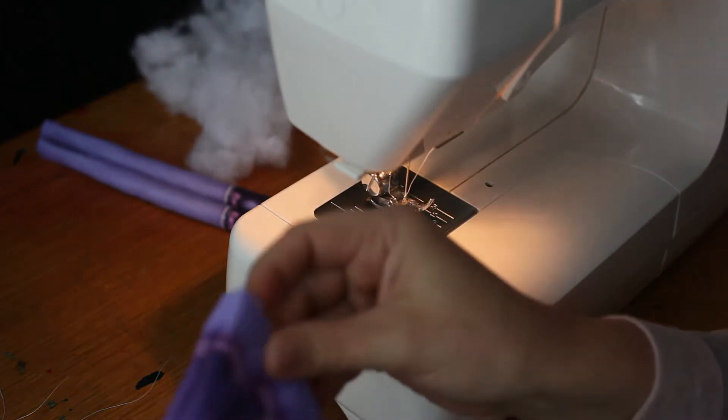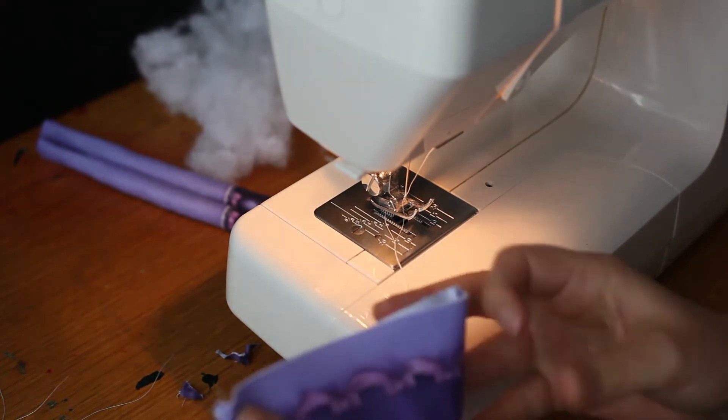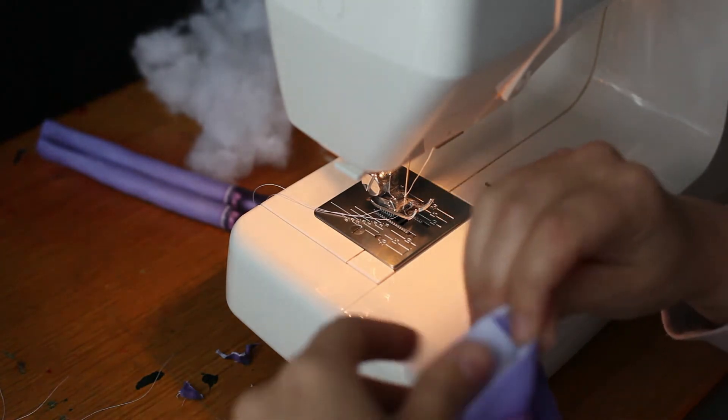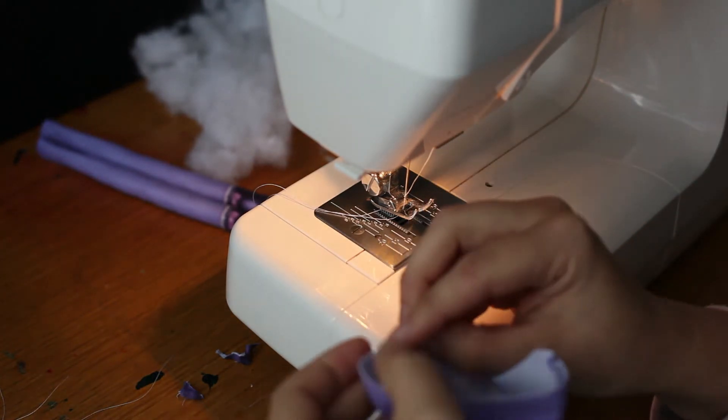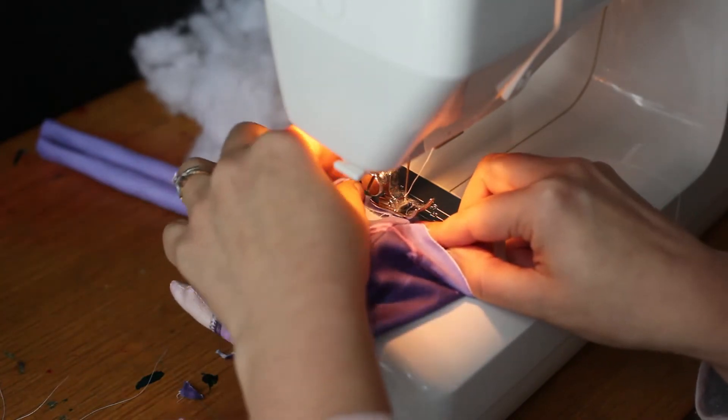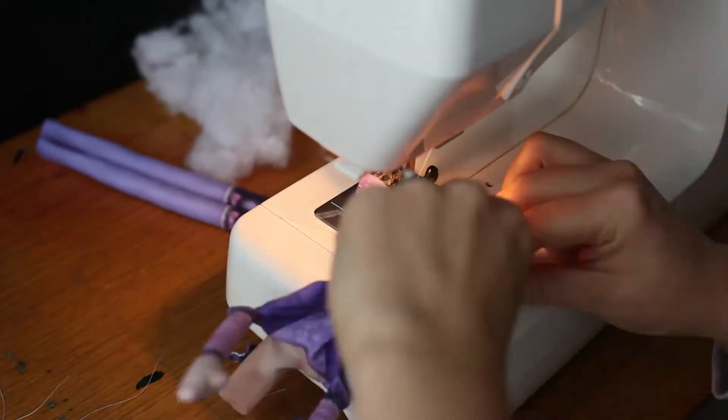So next step is to hem the dress. You don't have to if you wanted to. You could just use pinking shears or something to give it a nice decorative edge. But I like to just hem it in a little bit. I just give it a single hem like this. There we go.